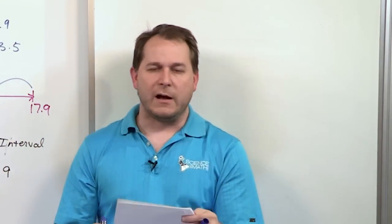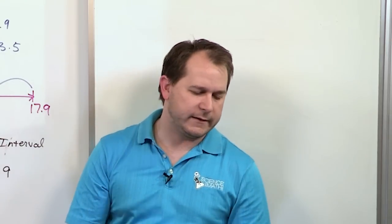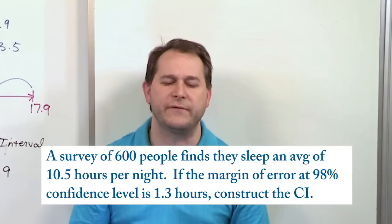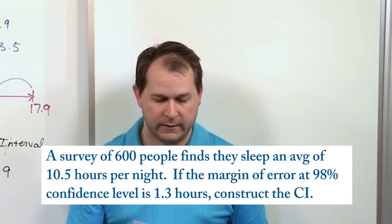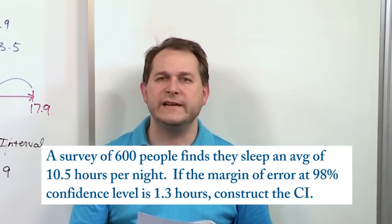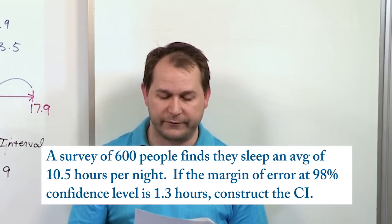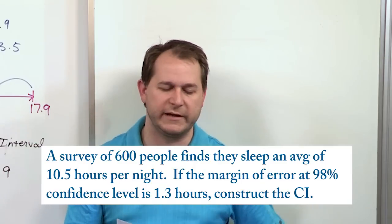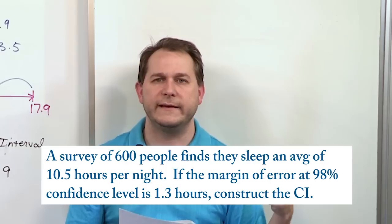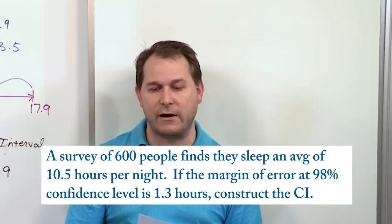Similar type of problem, we'll just do it for practice. A survey of 600 people finds they sleep an average of 10.5 hours per night. If the margin of error at 98% confidence level is 1.3 hours, construct the CI. We're given how many people we sampled, and the sample mean is 10.5 hours in this case.